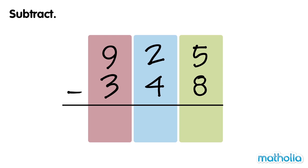So we regroup 1 ten into 10 ones. Now we have 1 ten and 15 ones. Now we can subtract the ones: 15 ones minus 8 ones equals 7 ones.